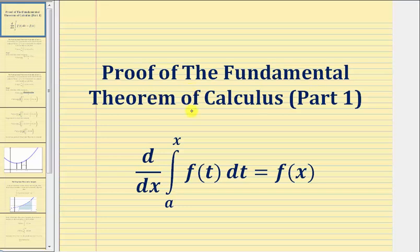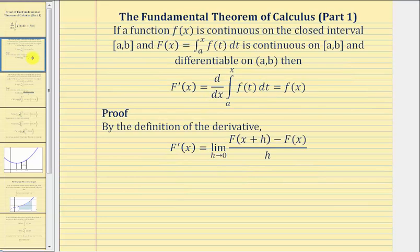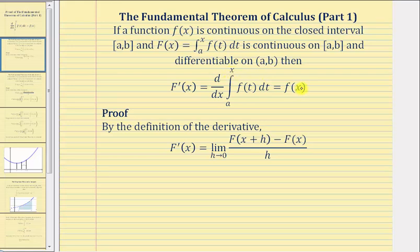Welcome to a proof of the Fundamental Theorem of Calculus, part one. The Fundamental Theorem of Calculus, part one, states that if a function f of x is continuous on the closed interval from a to b, and big F of x equals the definite integral of f of t with respect to t from a to x, is continuous on the same closed interval and differentiable on the open interval, then big F prime of x — which equals the derivative with respect to x of the definite integral of f of t from a to x — equals f of x. Notice how this is telling us that the derivative of this integral is equal to the integrand function f with the change of variables to x.